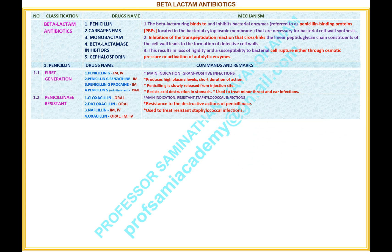Number 1.2 — Name of the classification: Penicillinase-resistant penicillins. Drugs under this classification: 1. Cloxacillin, available route: oral. 2. Dicloxacillin, available route: oral. 3. Nafcillin, available route: intramuscular and intravenous. 4. Oxacillin, available route: oral, intramuscular and intravenous. Comments and remarks — main indication: resistant staphylococcal infections. Resistance to the destructive actions of penicillinase; used to treat resistant staphylococcal infections.